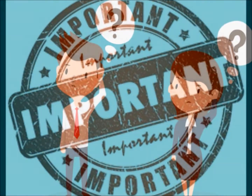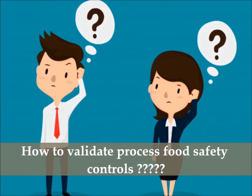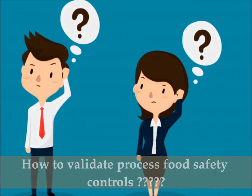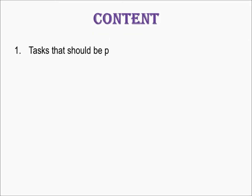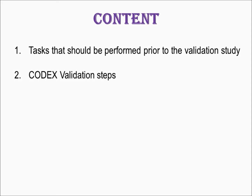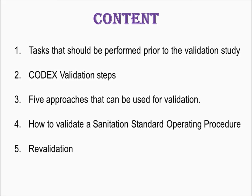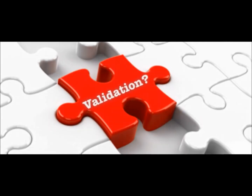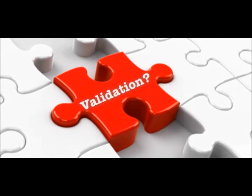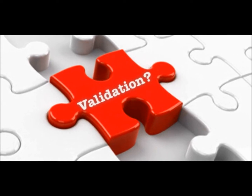Validating Food Safety Controls. Today we are going to discuss a most important area. Many of our friends engaged in the food industry are confused about how to validate or process food safety controls. We will cover tasks that should be performed prior to the validation study, Codex validation steps, five approaches that can be used for validation, how to validate a sanitation standard operating procedure, re-validation, and finally an example of heat process validation.